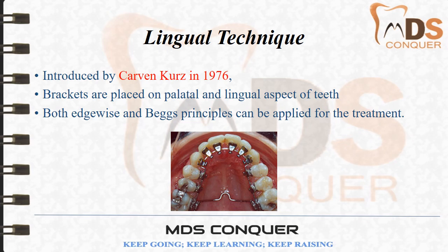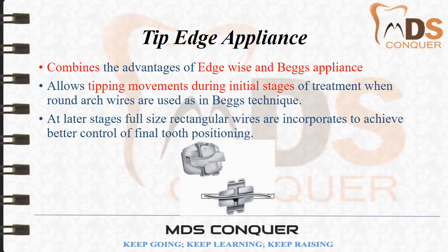A modern technique is the lingual technique, introduced by Craven Kurz in 1976. There has been extensive evolution over eight generations of lingual brackets. Brackets are placed on the palatal and lingual aspect of teeth. Both edgewise and Begg principles can be applied — either a rectangular bracket with rectangular wire as in edgewise, or a bracket with a vertical slot and round wire as in Begg's principle.